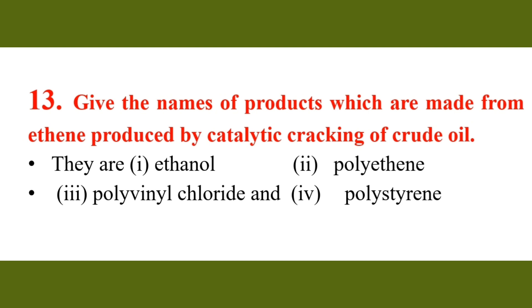Give the names of products which are made from ethylene produced by catalytic cracking of crude oil. Number 1: ethylene. Number 2: polyethylene. Number 3: polyvinyl chloride. Number 4: polystyrene.